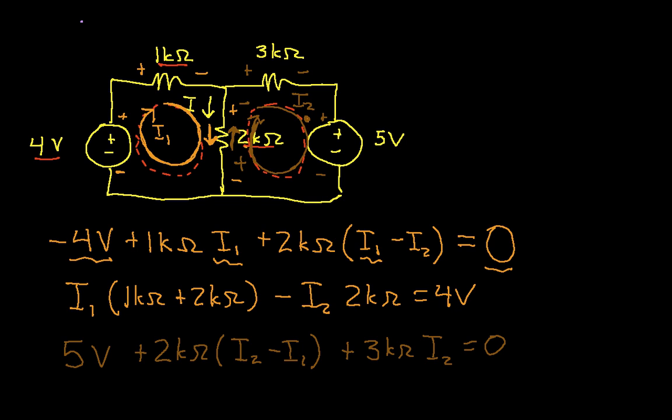And again, I can do some simplification on this. So I have minus I2 times 2k ohms plus, we don't want to have this be I2, we want this to be I1. Plus I2, 2k ohms plus 3k ohms. And we'll move the 5 volts to the other side, and we have minus 5 volts.